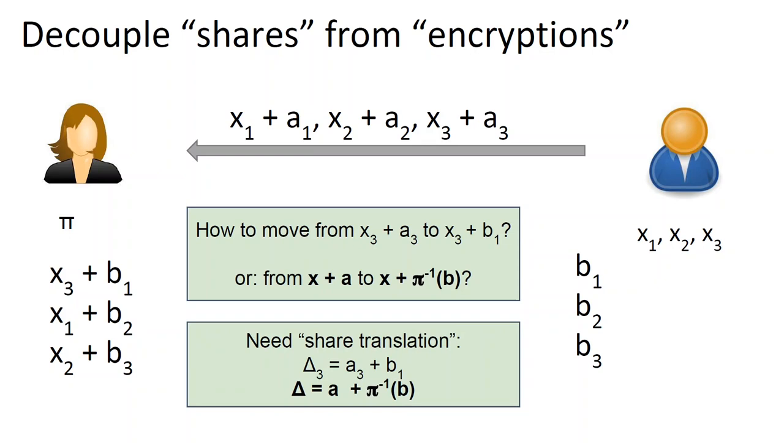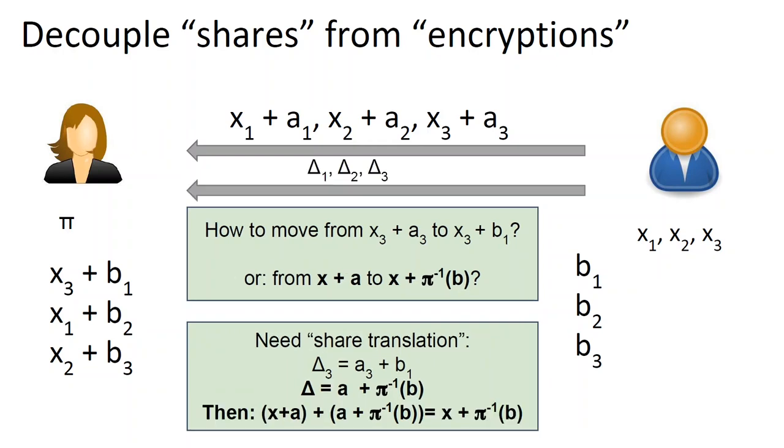So we need some mechanism for Alice to be able to convert x3 plus a3 into x3 plus b1, or more generically, to move from shares under a, which is a vector x plus a, to shares under permuted b, which are x plus inverse of pi of b. If Alice somehow knew the difference between the two, she could easily move from one to the other. We call this difference share translation, since it allows to translate between two types of shares, and denote it by delta. For instance, in our example of x3 plus a3 and x3 plus b1, delta will be the difference, which is a3 plus b1. Our idea is to devise an efficient protocol, which allows Alice to learn these deltas. And then Alice can add the delta vector to x plus a vector, a's will cancel out, and Alice will get x plus permuted b, which it can then permute to get permuted x plus b. So once we describe how to build share translation protocol, we will be done.